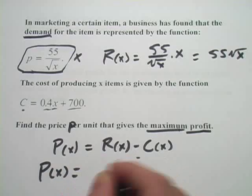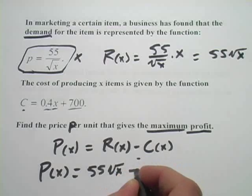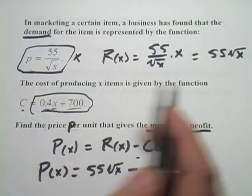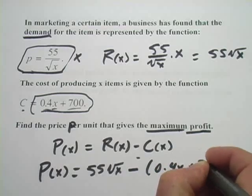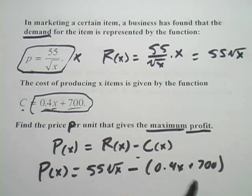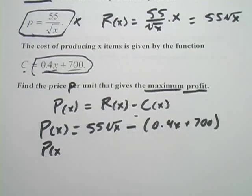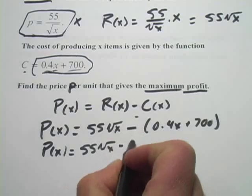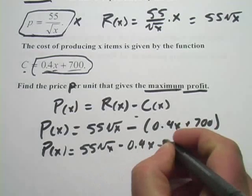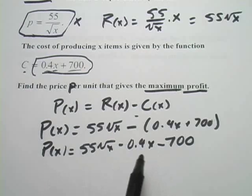So profit is 55 times the square root of x, that's our revenue, minus this whole thing. So that's minus 0.4x plus 700. And I'll just bring the minus sign through here. Now we've got our profit function. We want to find the maximum here.